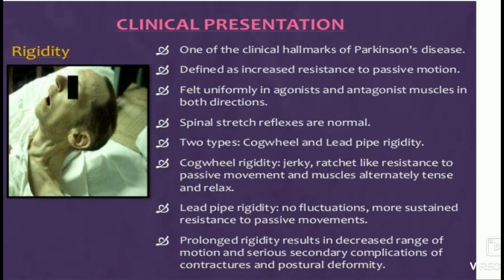Rigidity is of two types: cogwheel and lead pipe. Cogwheel rigidity means jerky, ratchet-like resistance to passive movement where muscles alternately tense and relax. In lead pipe rigidity, no fluctuations are shown but there is more sustained resistance to passive movements. Prolonged rigidity results in decreased range of motion and serious secondary complications of contractures and postural deformity.